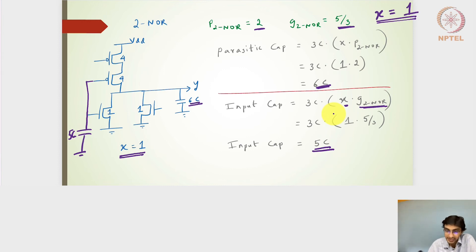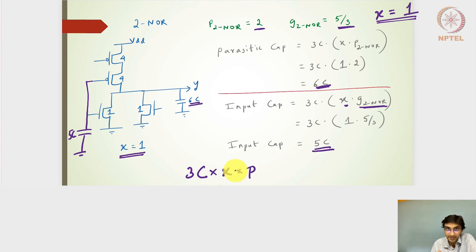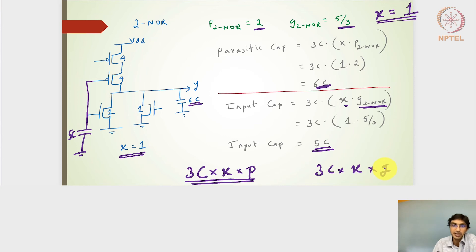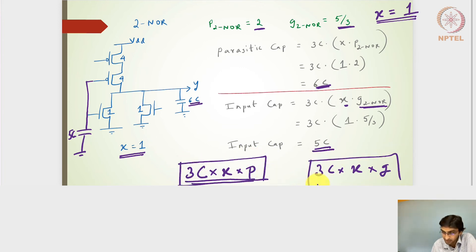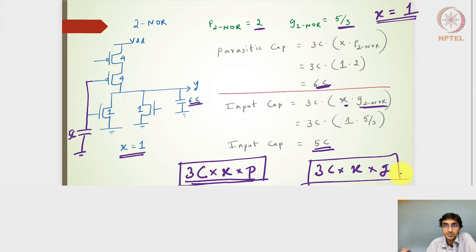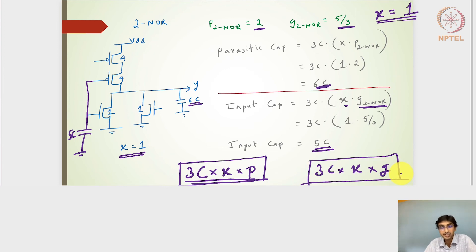Going forward, we can use this: 3C × driving factor × parasitic factor gives the parasitic capacitance for any gate defined by its driving factor, and 3C × driving factor × logical effort gives the input capacitance of that gate. These absolute capacitance values are very useful when estimating energy or switching power — the dynamic power — and the dynamic energy delivered by VDD, making the driving factor approach very valuable in higher-order digital logic circuit designs.